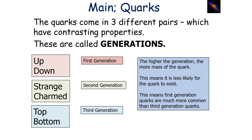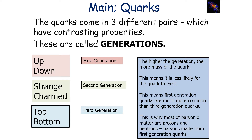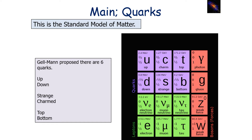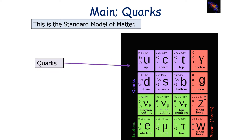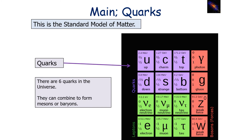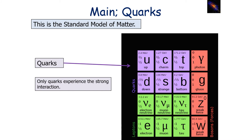The first generation is the up and down quarks, the second generation is the strange and charm quarks, and the third generation is the top and bottom quarks. The higher the generation, the higher the mass of the quark, meaning it's less likely for the quark to exist. First generation quarks are much more common than third generation quarks, which is why most baryonic matter consists of protons and neutrons — baryons made from first generation quarks. We know there are six different quarks which can combine to form mesons or baryons, but quarks will only experience the strong interaction.